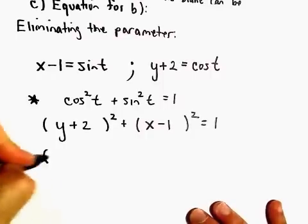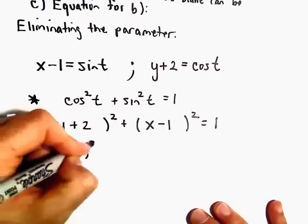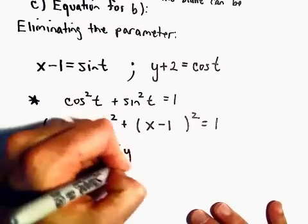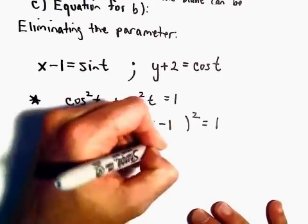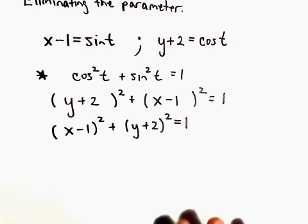And again, I'm not really going to do anything at all here. This is x minus 1 squared. I'm just going to reorder it. y plus 2 squared equals 1. So recall,